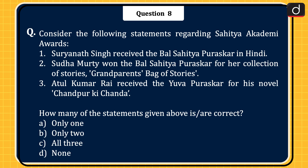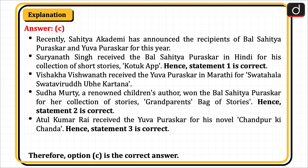Next question: Consider the following statements regarding Sahitya Akademi Awards. 1. Suryanath Singh received the Baal Sahitya Puraskar in Hindi. 2. Sudha Murthy won the Baal Sahitya Puraskar for her collection of stories, 'Grandparents' Bag of Stories'. 3. Atul Kumar Rai received the Yuva Puraskar for his novel 'Chand Purki Chanda'. How many statements are correct? The correct answer is Option C, all three. Sahitya Akademi announced the recipients of Baal Sahitya Puraskar and Yuva Puraskar. Suryanath Singh received the Baal Sahitya Puraskar in Hindi for his short story collection — hence Statement 1 is correct. Sudha Murthy won the Baal Sahitya Puraskar for 'Grandparents' Bag of Stories' — hence Statement 2 is correct. Atul Kumar Rai received the Yuva Puraskar for 'Chand Purki Chanda' — hence Statement 3 is correct. Therefore, Option C is the correct answer.